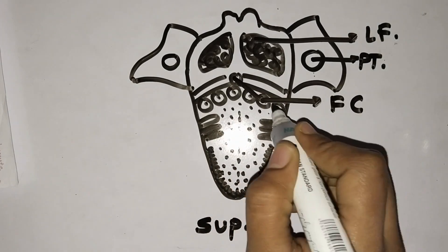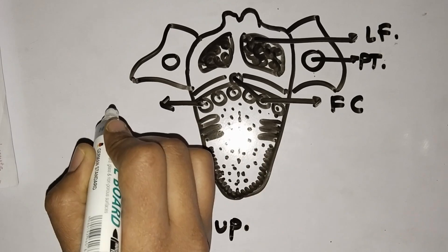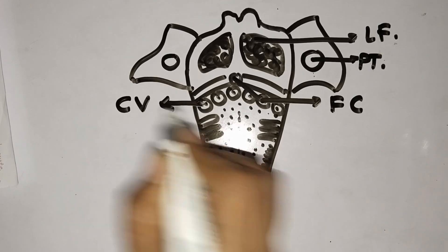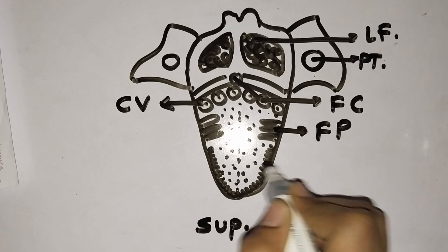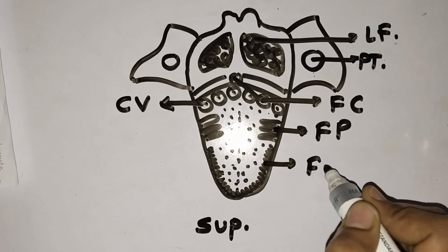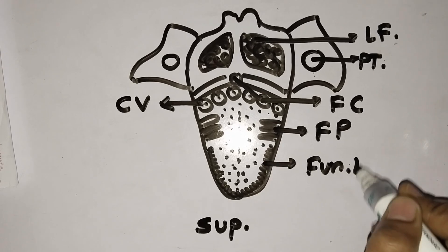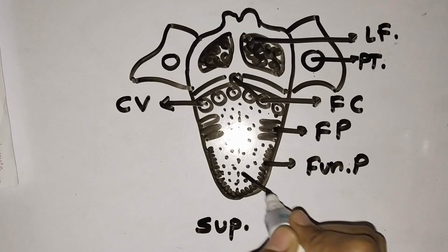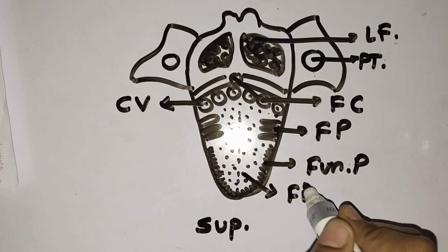These are the palatine tonsils. These are the foliate papillae. This is the fungiform papillae. These are the filiform papillae.